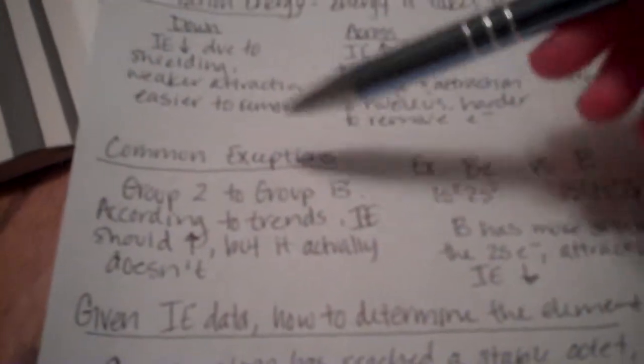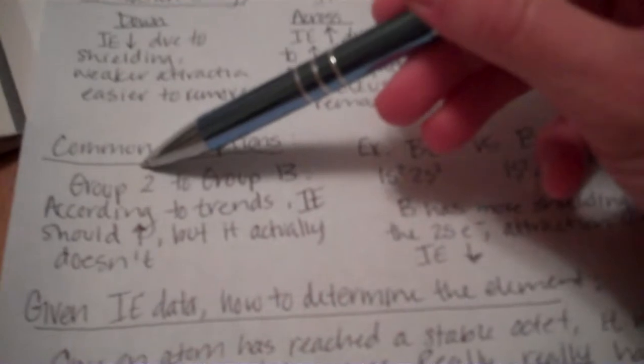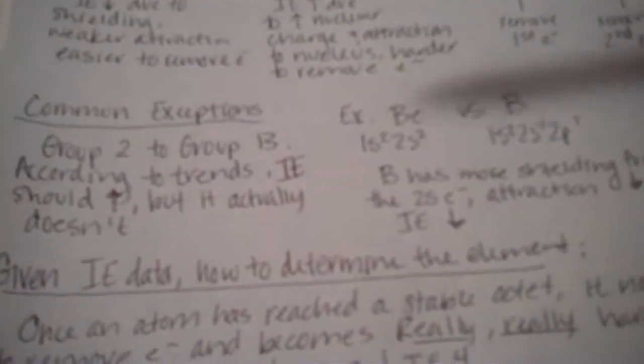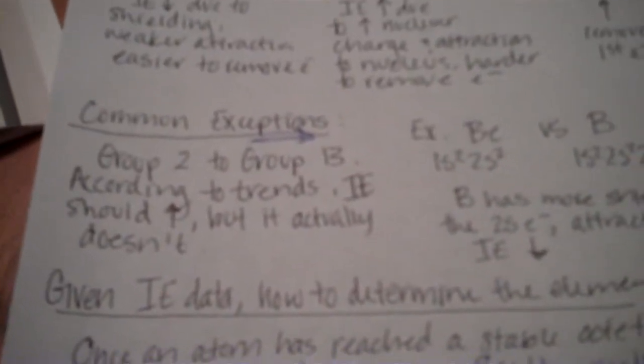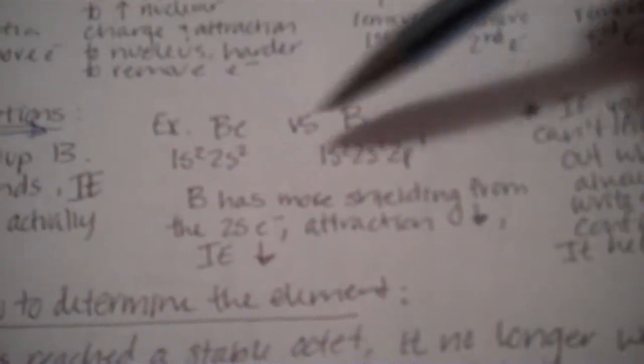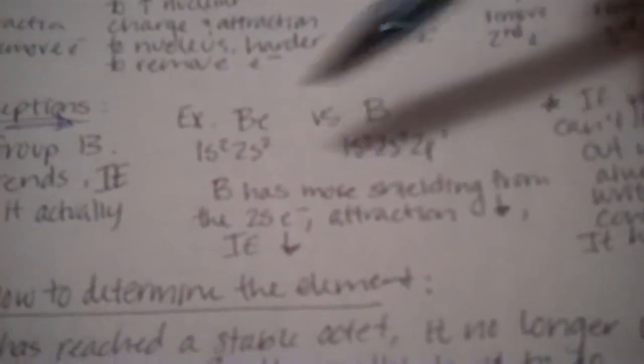So, something that seems to pop up sometimes are common exceptions to the rule. So, when you travel from group 2 to group 13, according to trends, the ionization energy, because we're going across, should increase, but it actually does not. So, this is a common example. So, Be versus B. So, Be has an electron configuration, 1s2, 2s2.